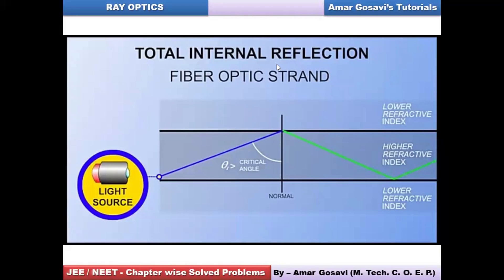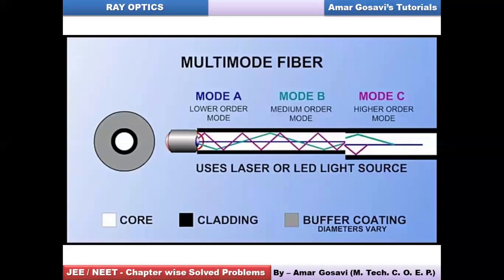Another diagram explains the same concept of multiple reflections using a laser or LED light source. It clearly shows which part is the core, which part is the cladding, and what is the buffer cladding. This is a multi-mode fiber, allowing variation in the modes of signal transmission.